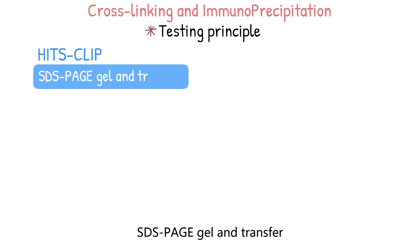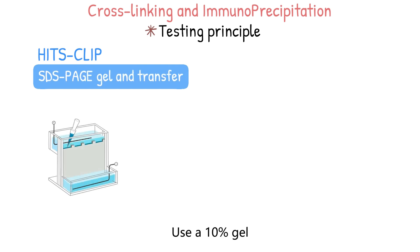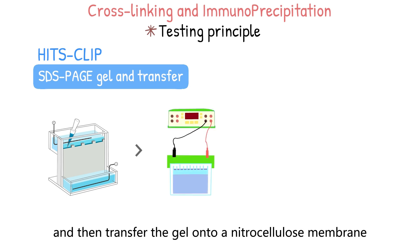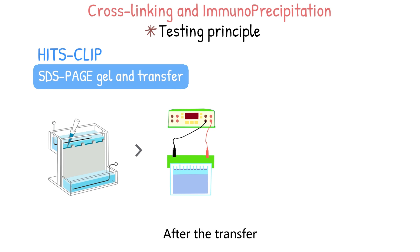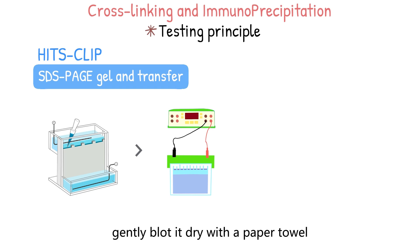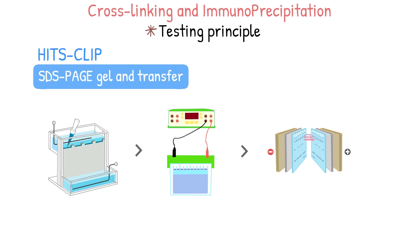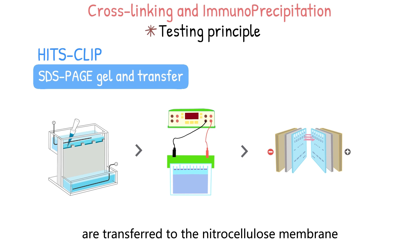Step 5: SDS-PAGE gel and transfer. Use a 10% gel, run at 150 volts until the dye front reaches the bottom of the gel, and then transfer the gel onto a nitrocellulose membrane. After the transfer, rinse the nitrocellulose with PBS, gently blot it dry with a paper towel, wrap the nitrocellulose in plastic wrap, and expose it to film. This way, the RNA-protein complexes on the gel are transferred to the nitrocellulose membrane.